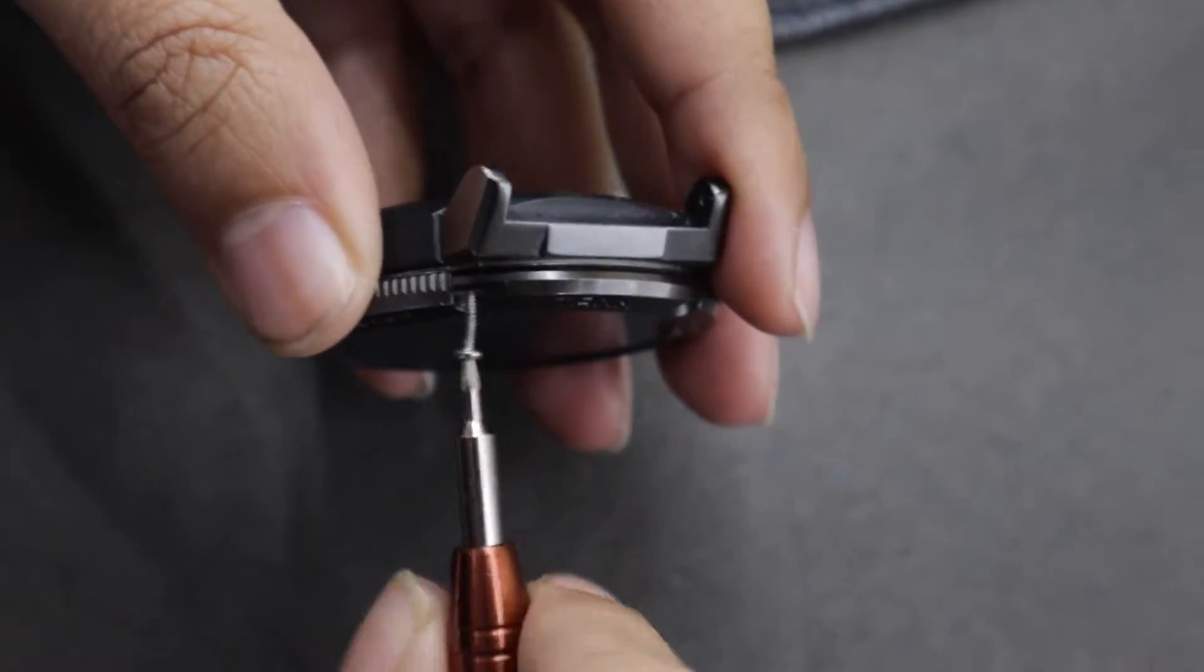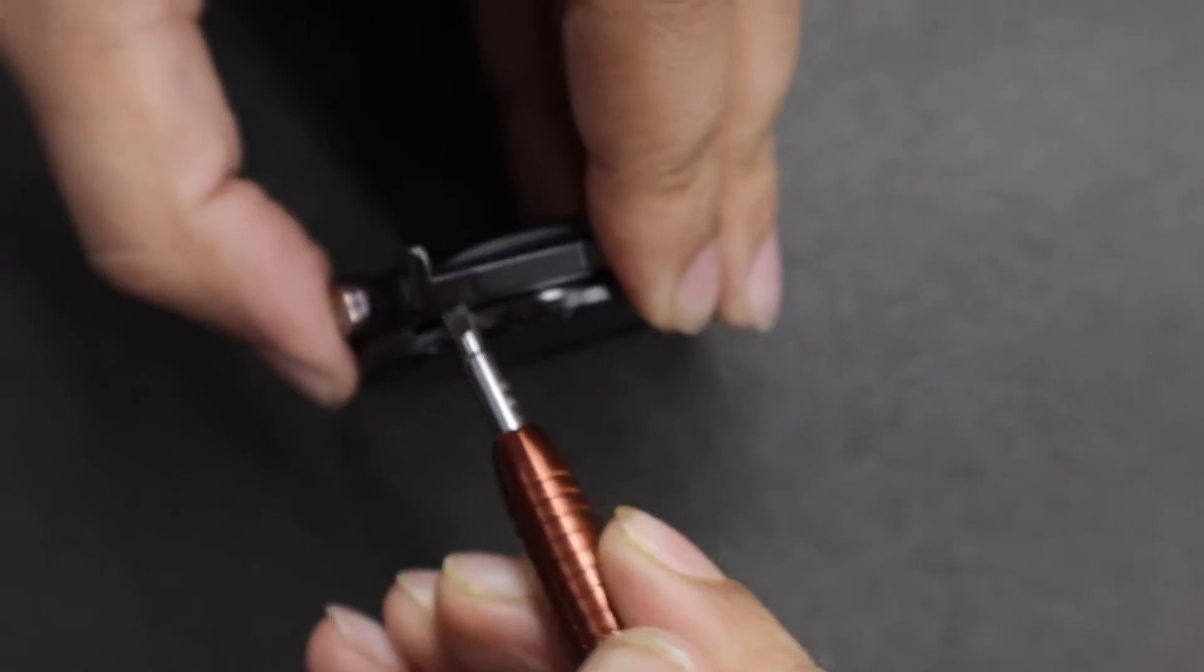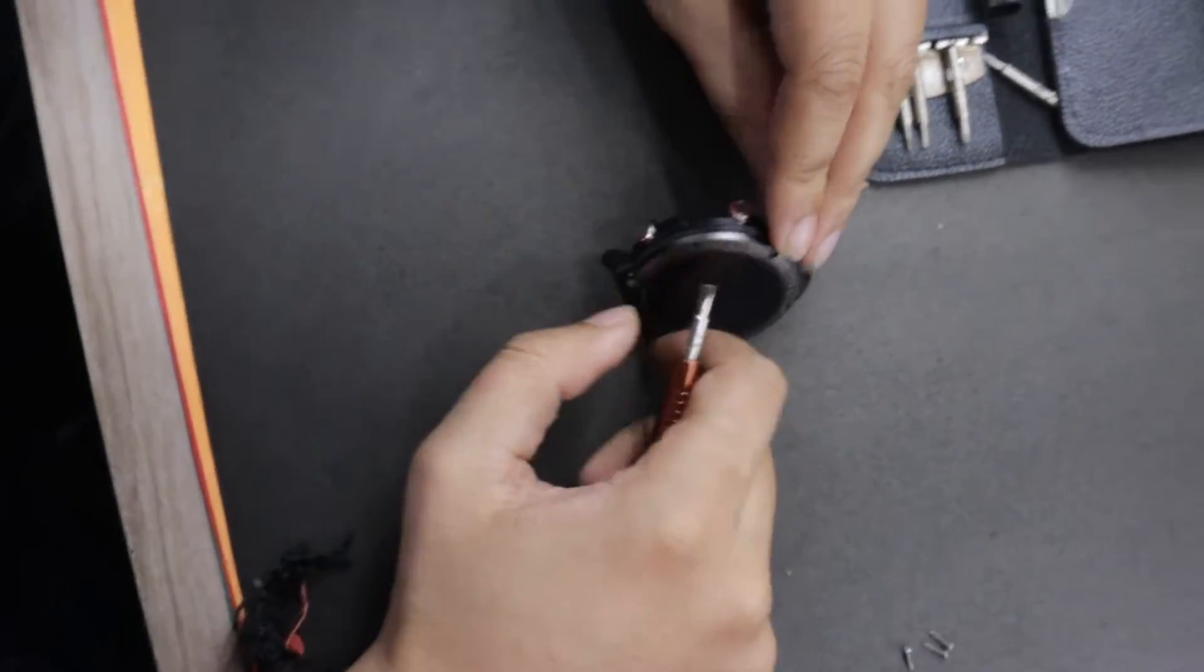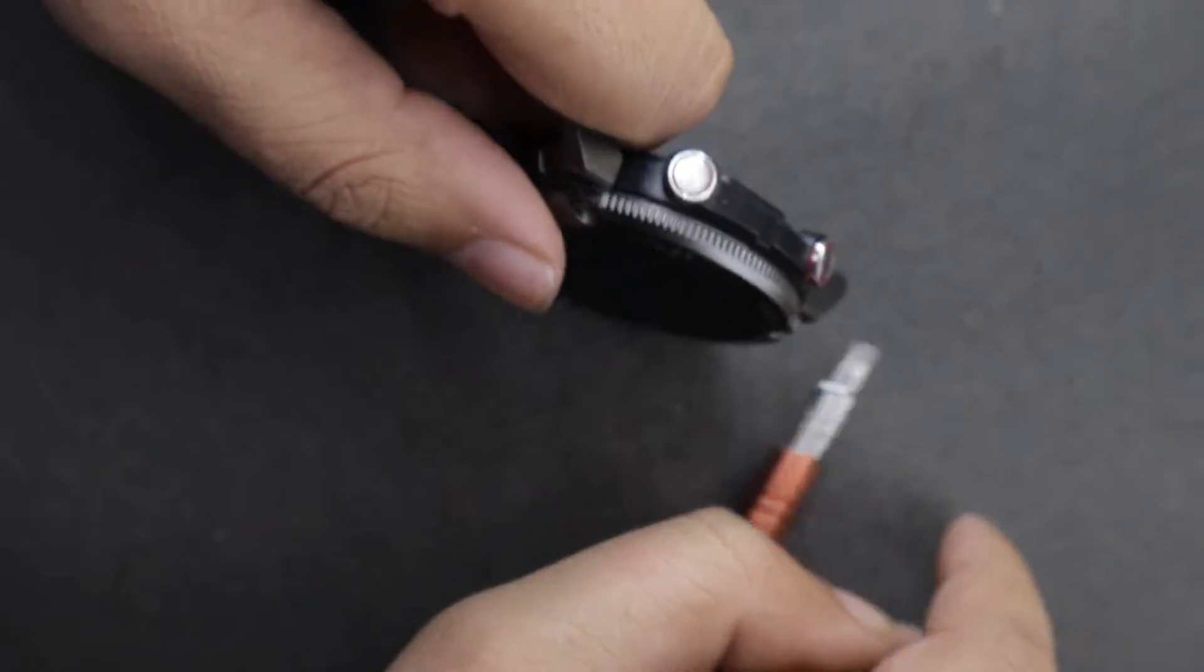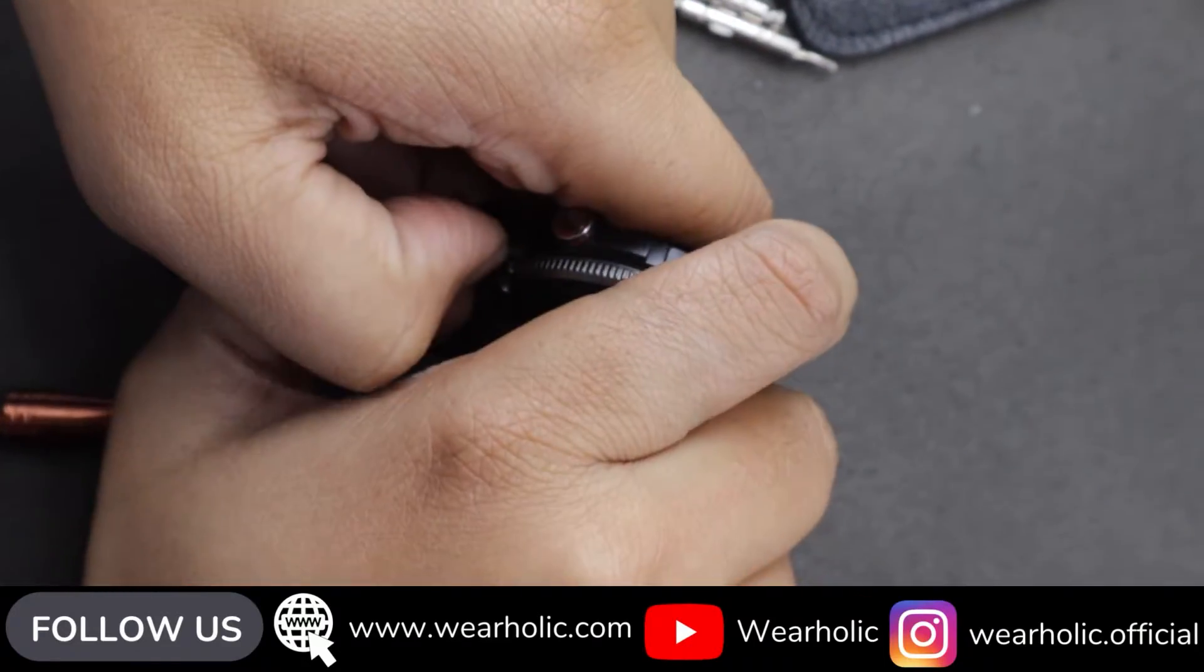So guys, screw has now been removed and it's time to remove the bezel. It looks like the bezel is glued to the watch. Unfortunately, we don't have a heat gun or rubbing alcohol in our studio. So I will be right back.